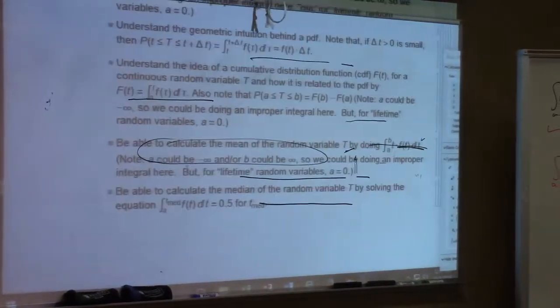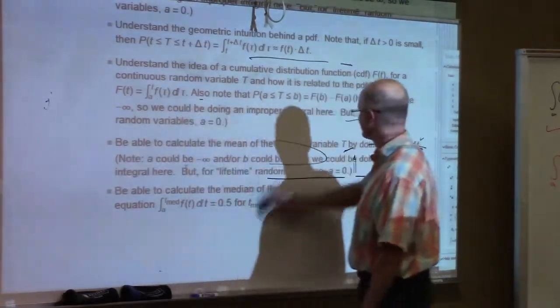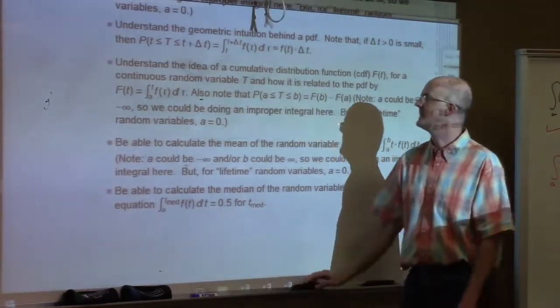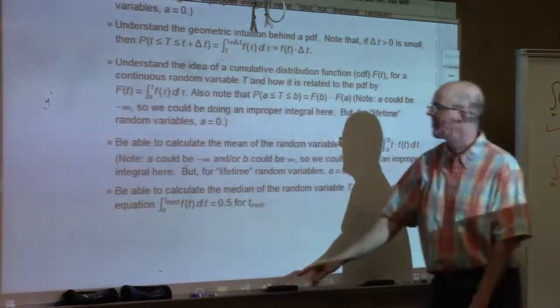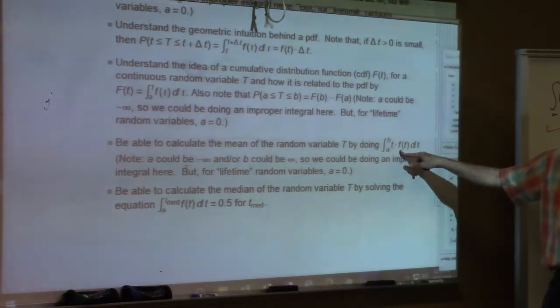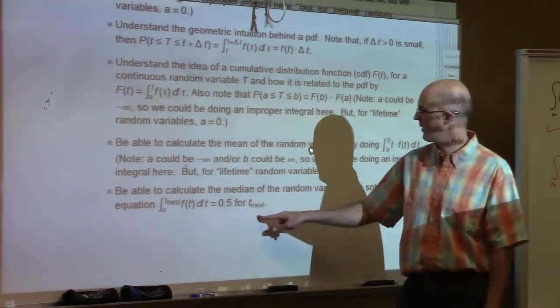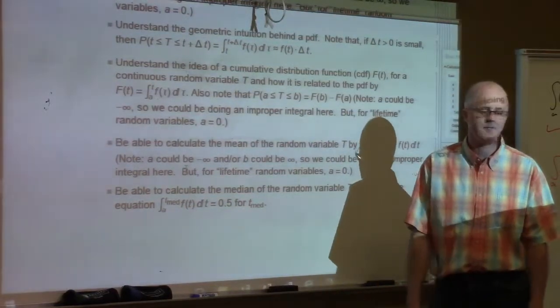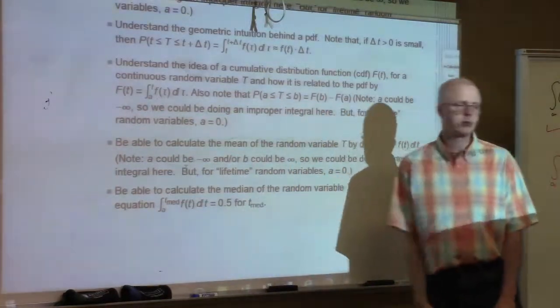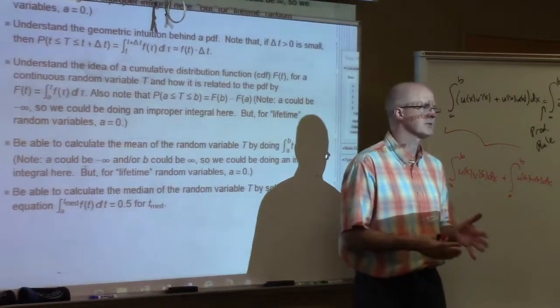Almost done. Be able to calculate means and medians. Also be able to interpret the graphs in terms of the areas of the PDF and the differences of the CDF. Calculate the mean by doing this kind of integral. Calculate the median by solving this kind of equation for this upper limit. T-med is the median time. Do the integral with T-med as an unknown. Set it equal to 0.5 and solve for T-med. Both the mean and median are measures of central tendency.